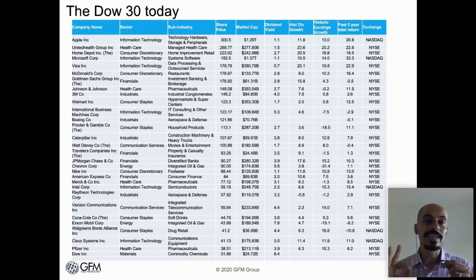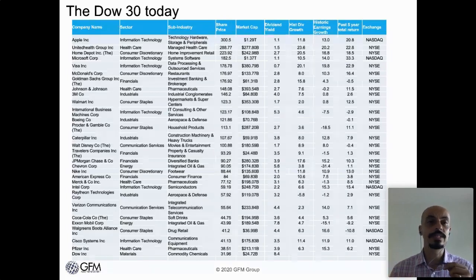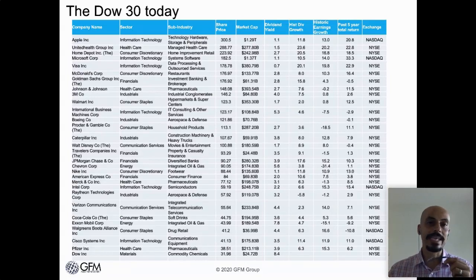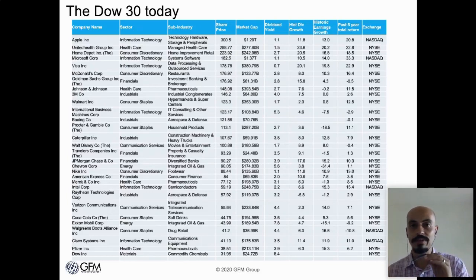The one sector the Dow Jones Industrial Average still excludes is transportation. For example, the Dow Jones Industrial Average has never included an airline — those were always in the Dow Transports. So those are things to understand when considering what is in the Dow Jones Industrial Average and what is not.